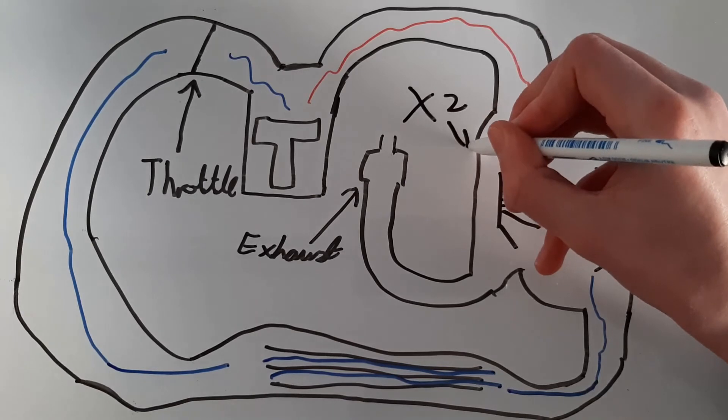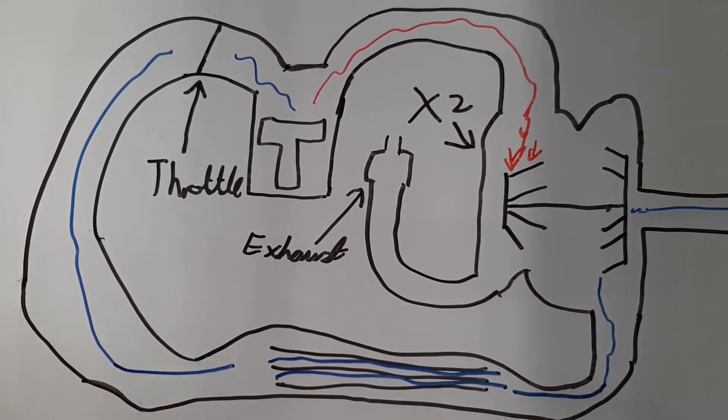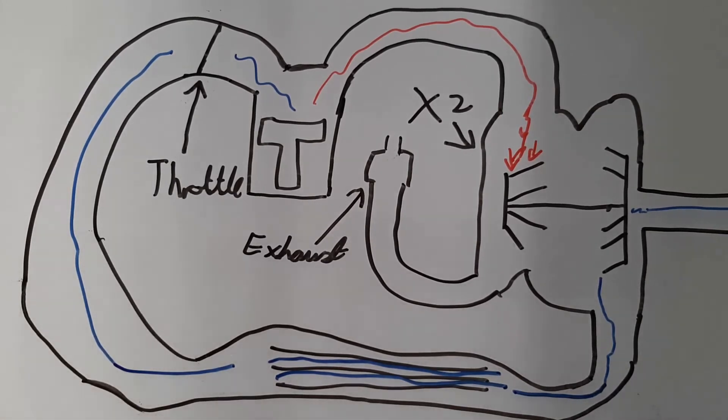We can also use the twin scroll turbo, which takes exhaust gases alternately from the cylinders, as cylinders all fire in sequence. This increases efficiency as the gases exit in irregular pulses from the different cylinders, and if only one scroll was used, they would collide and reduce the flow strength.